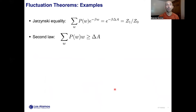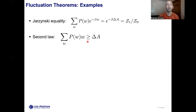Since w is a random variable, we will have a probability distribution p of w. Examples of fluctuation theorems include Jarzynski's equality: it tells us that the expectation value of the exponential of minus beta times w under p of w coincides with the exponential of minus beta times the free energy difference — the ratio of the partition functions. Even the second law of thermodynamics can be formulated in terms of properties of p of w: the expected value of the work in p of w is always lower bounded by the free energy difference.